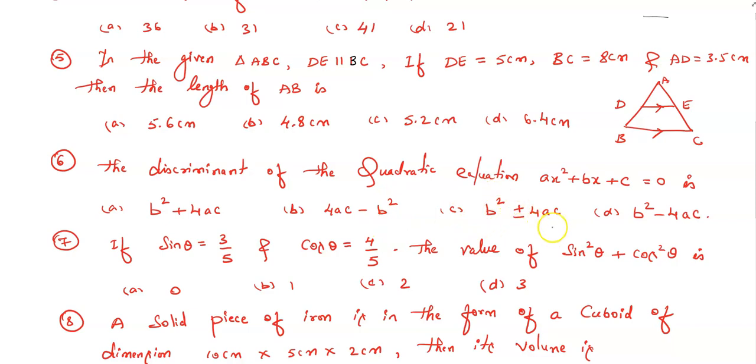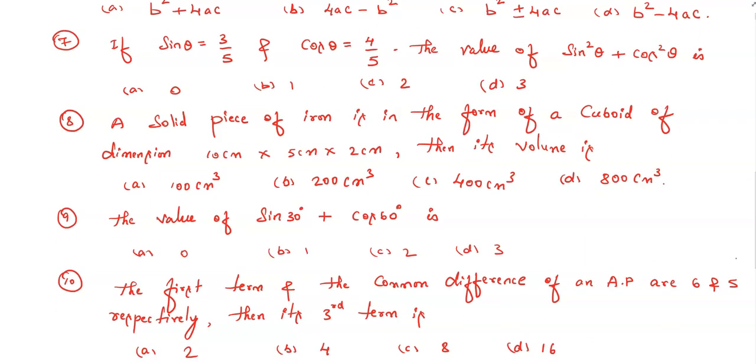Question number seven: if sin θ equals 3/5 and cos θ equals 4/5, then the value of sin²θ + cos²θ is—among these four options you need to select which is the correct answer.